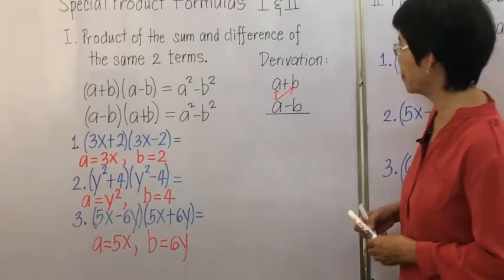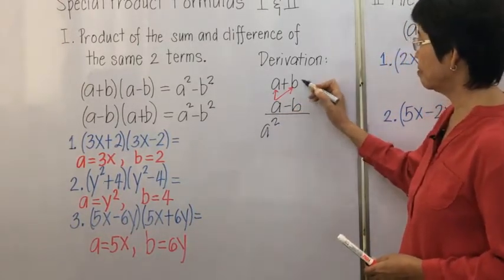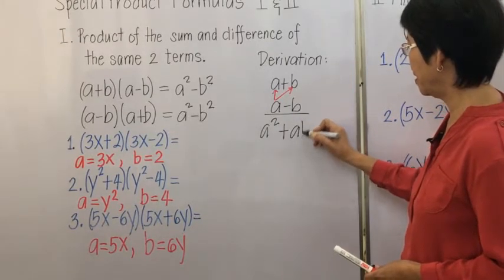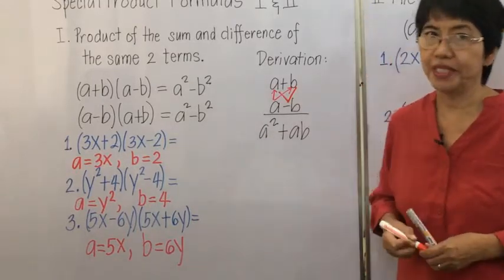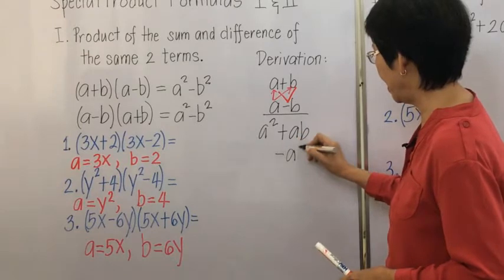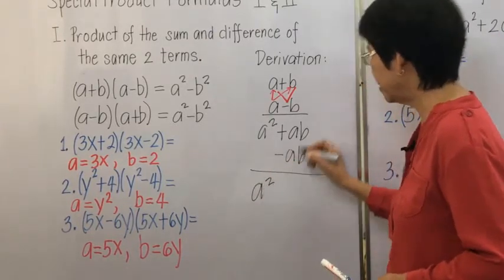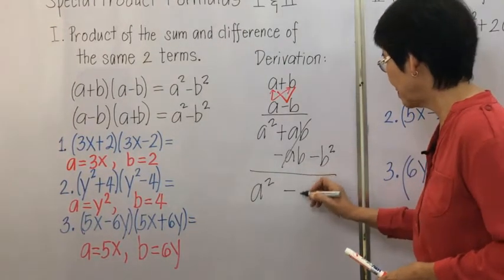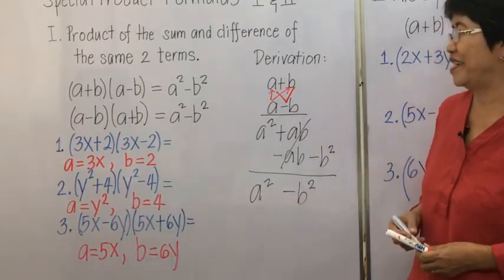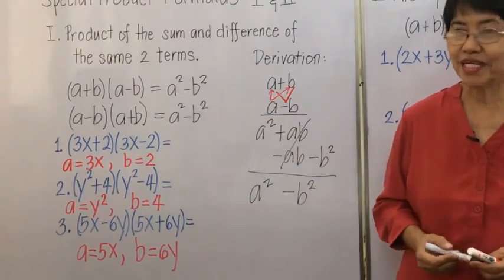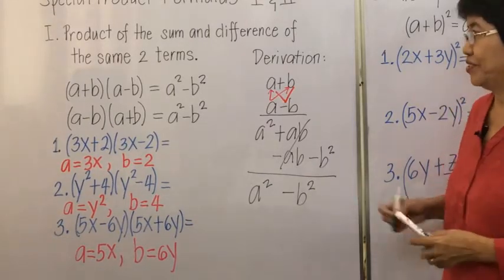Let's go to the derivation of the formula. We start with a times a, so we have a squared, then a times b plus ab, then negative b times a giving negative ab, and negative b times b giving negative b squared. The middle terms cancel to zero, so the answer is a squared minus b squared. Just memorize the formula because you don't need to go through the long multiplication — that saves you time in future computations.